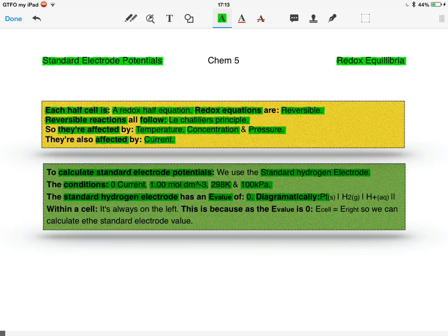Diagrammatically, the standard hydrogen electrode half cell has a platinum electrode with hydrogen gas bubbled in.